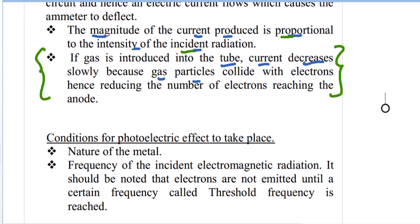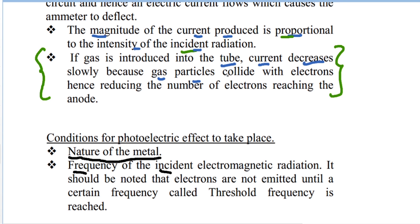Some conditions affect photoelectric emission: the nature of the metal matters, as different metals respond differently to irradiation. Also very important is the frequency of the incident radiation — if the frequency is not high enough, no photoelectric emission will take place. That minimum frequency required for photoelectric emission is called the threshold frequency.